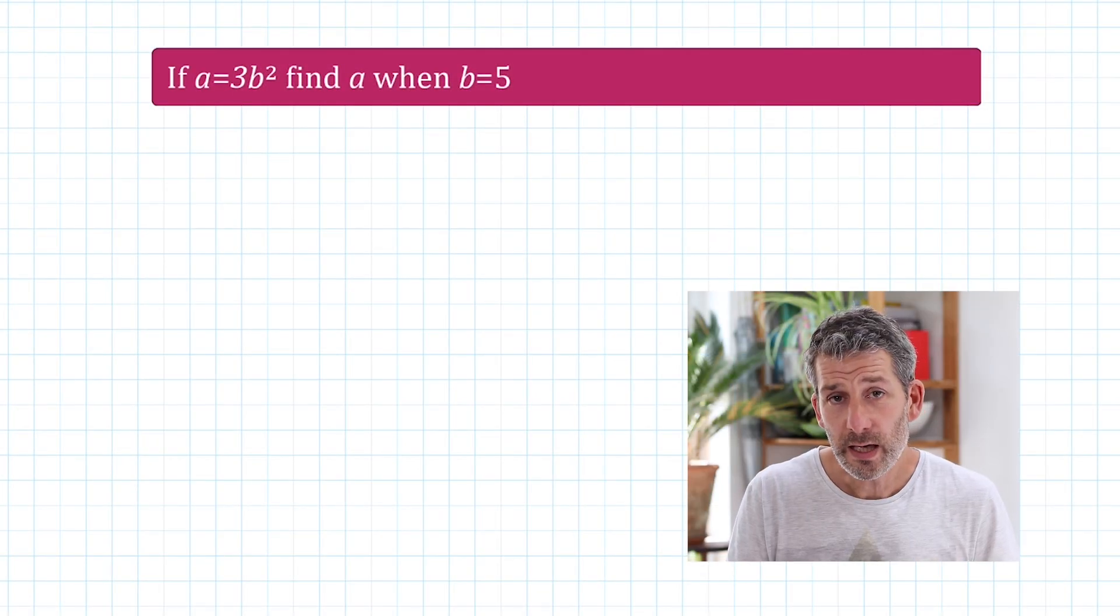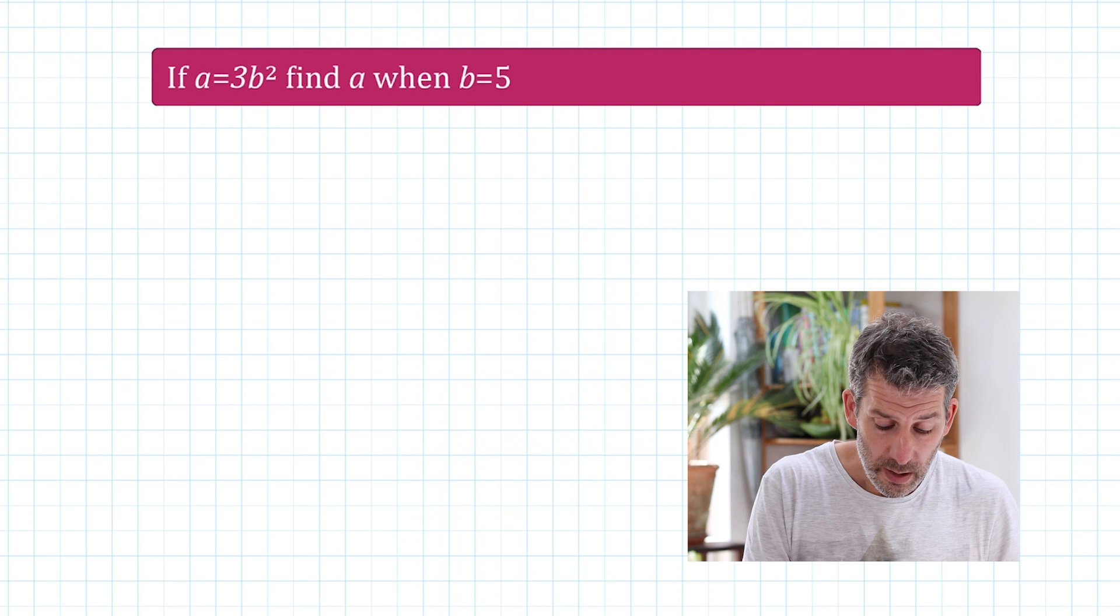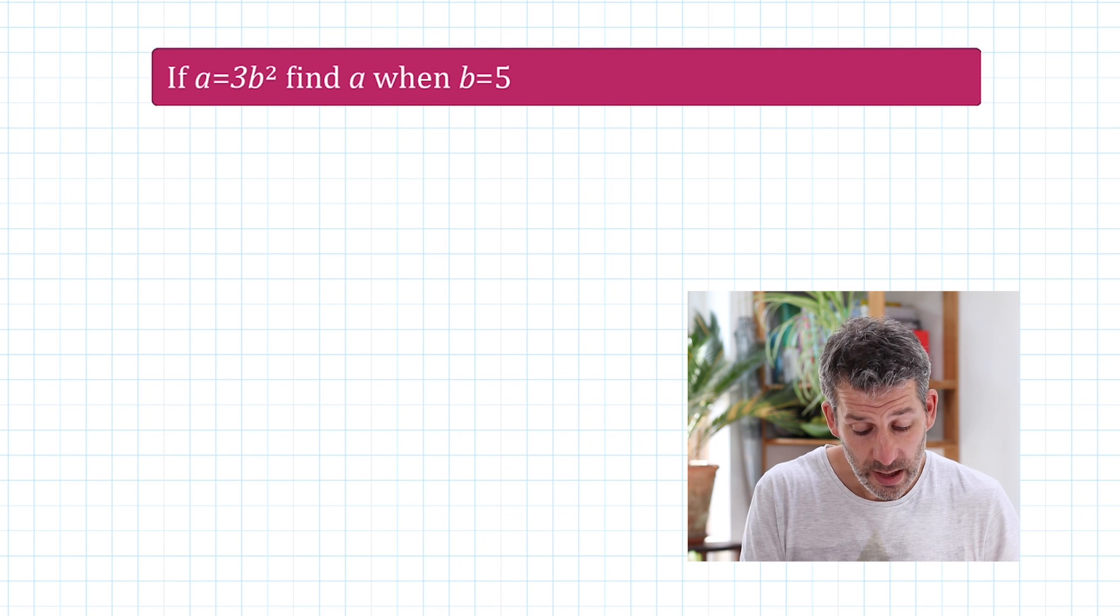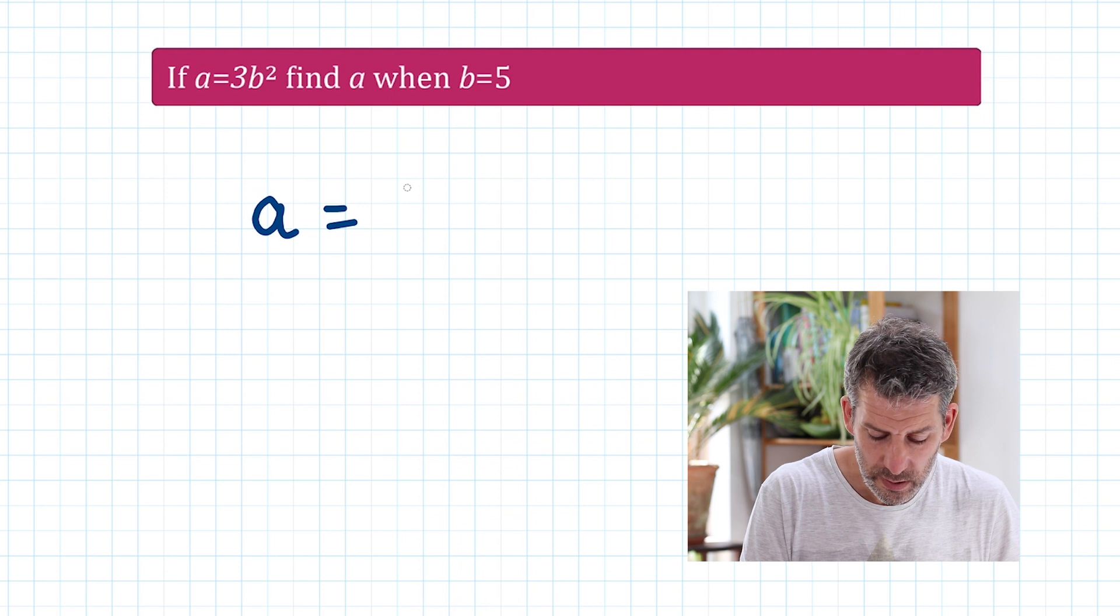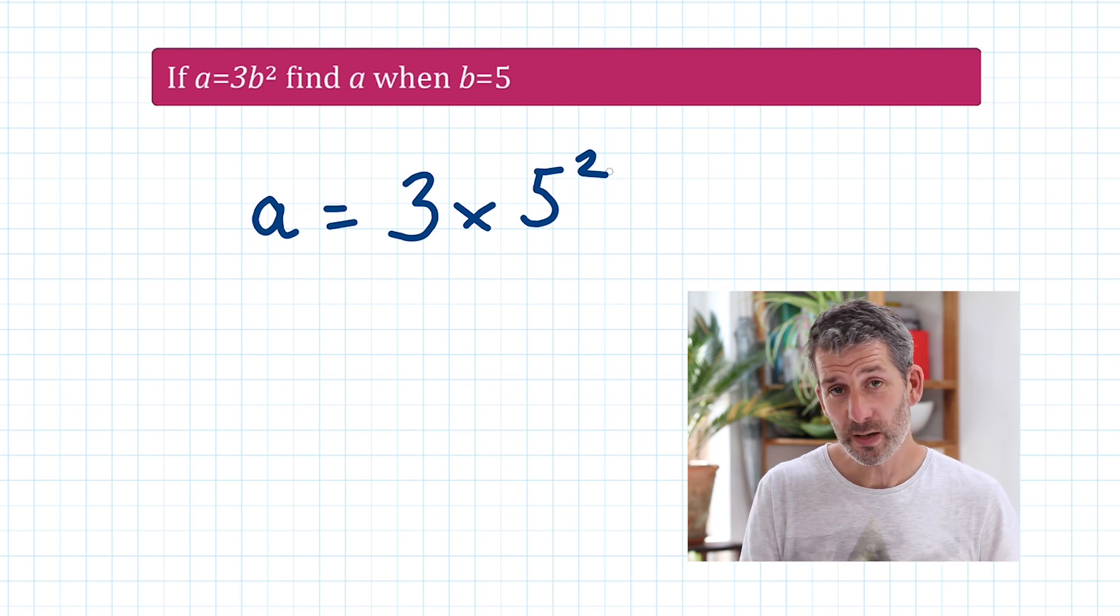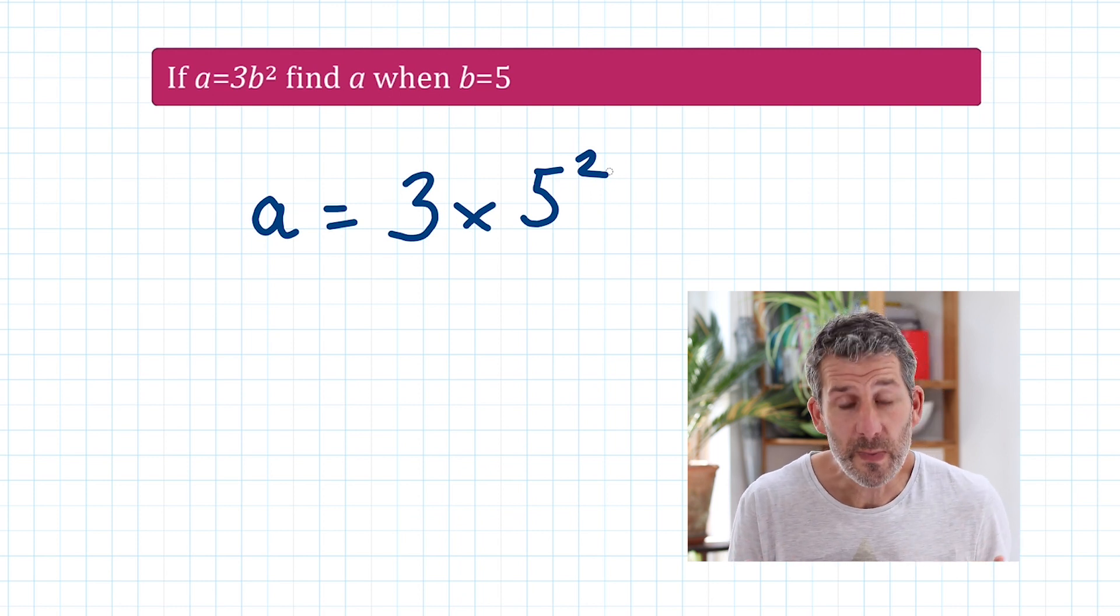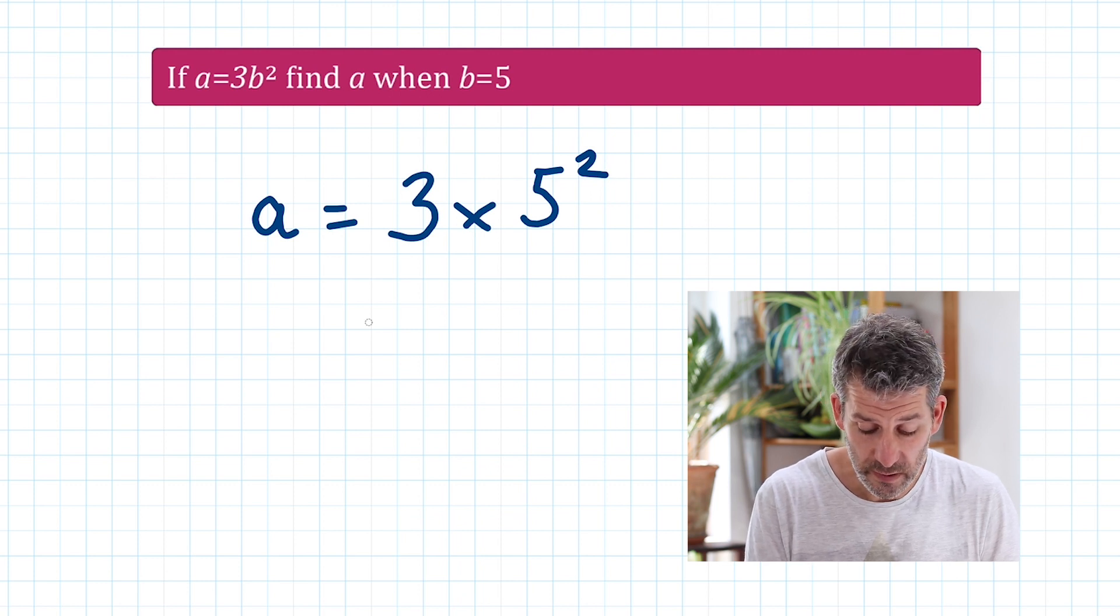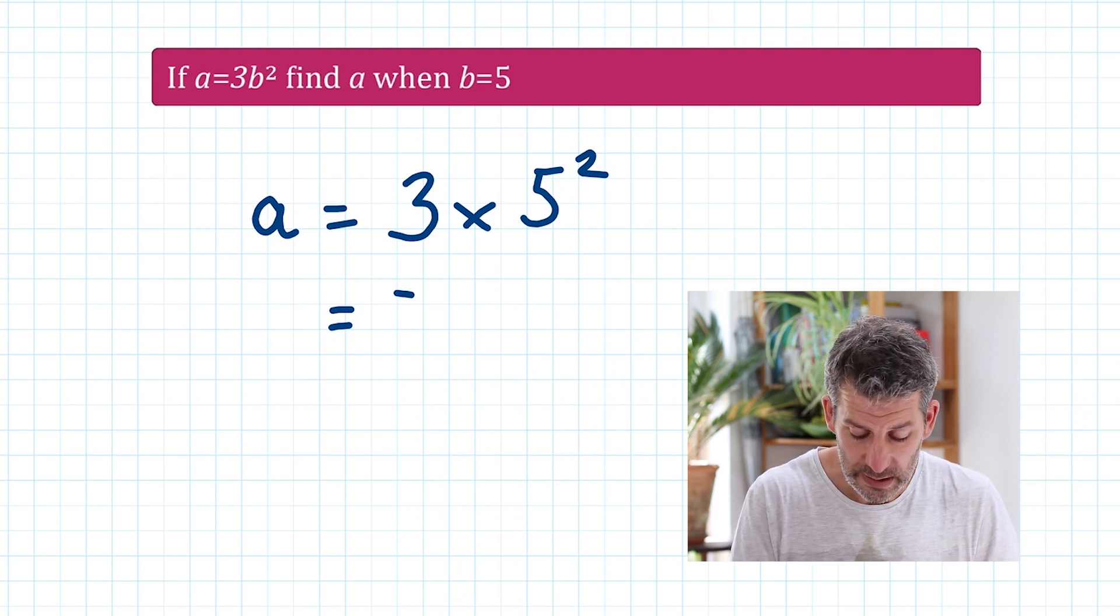If A equals 3B squared, find A when B equals 5. So we've got the B in the formula there, and we're just going to replace that with the 5. So don't forget that that means 3 times 5 squared. So A is equal to 3 times 5 squared. 3B squared means 3 times B squared, and B is 5. So it's 3 times 5 squared. This is one of those BIDMAS situations. You must do the squaring first. So you do the 5 squared, which is 25, and then you multiply that by 3. So 25 times 3 is 75.